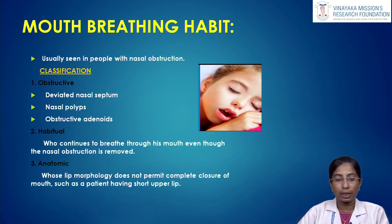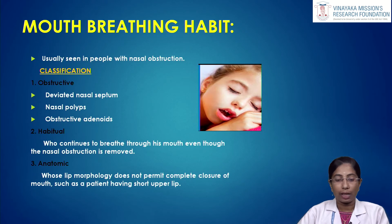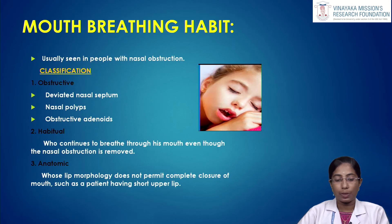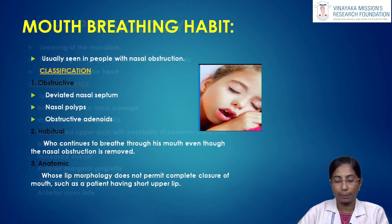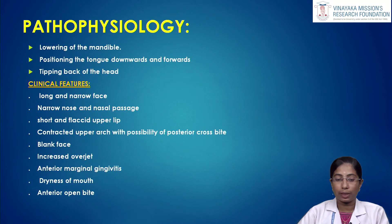Mouth breathing is usually seen in patients with nasal obstruction. It is classified into three types: obstructive, habitual, and anatomic. Obstructive causes include deviated nasal septum, nasal polyps, and obstructive adenoids. Habitual mouth breathers continue to breathe through the mouth even after nasal obstruction is removed. Anatomic mouth breathers are those whose lip morphology does not permit complete mouth closure, such as patients with a short hypotonic upper lip. The pathophysiology involves lowering of the mandible, positioning the tongue downwards and forwards, and tipping back of the head.